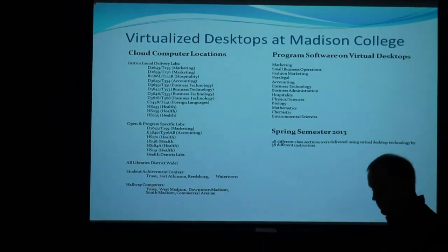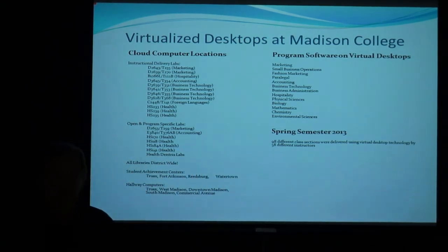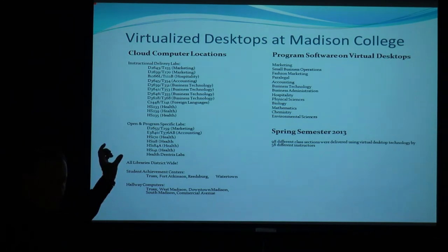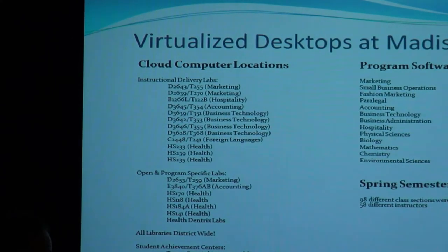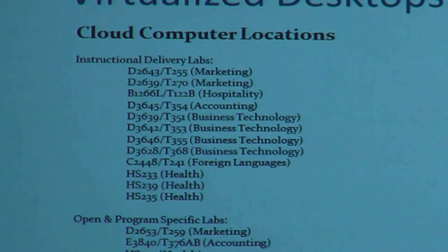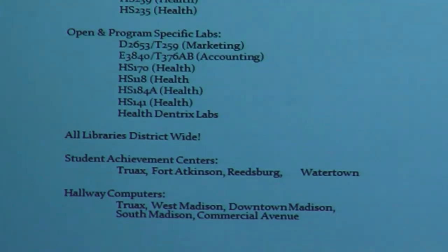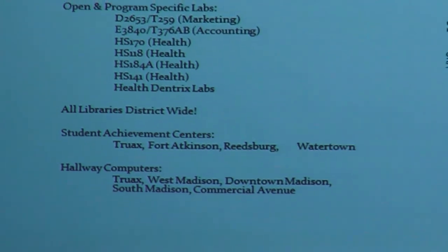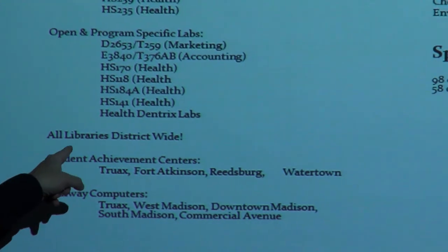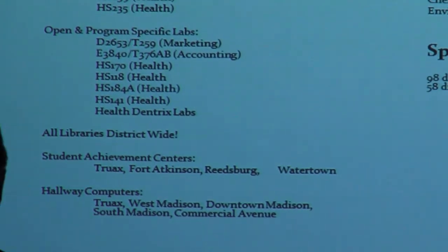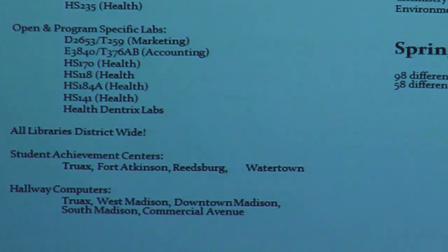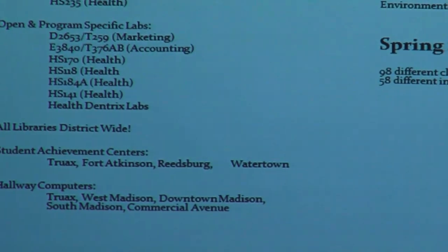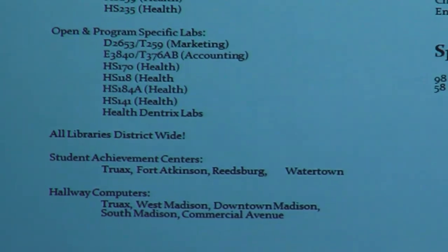Where are we at right now? We have 800 cloud computers deployed in quite a few places — a lot of different instructional delivery labs including marketing, accounting, paralegal, fashion, and many more. We've also converted open program-specific labs where students go to do homework. All libraries district-wide were converted this summer — 300 cloud computers deployed across all libraries. All student achievement centers in our regional campuses are cloud computers, as well as hallway computers at all Madison locations.